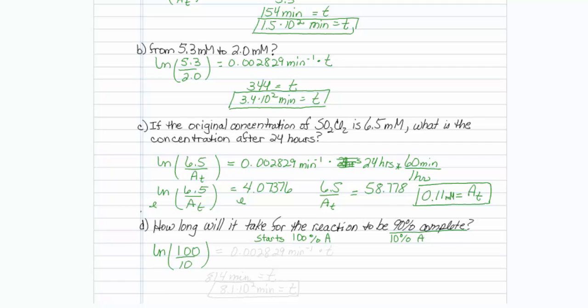that will represent we're starting at 100 percent, and now we have 10 percent left, which means we're 90 percent complete, and that has to be equal to my rate constant. I am trying to solve for time, and that turns out to be 814 minutes, or 8.1 times 10 to the second power of minutes is equal to the time at which we are 90 percent complete.